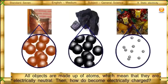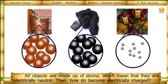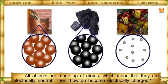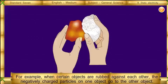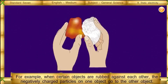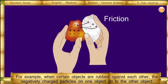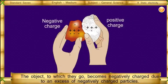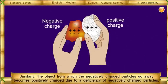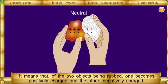All objects are made up of atoms, which means that they are electrically neutral. Then how do objects become electrically charged? For some reasons, the balance of electrically neutral atoms gets disturbed. For example, when certain objects are rubbed against each other, the negatively charged particles on one object go to the other. The object to which they go becomes negatively charged due to an excess of negatively charged particles. Similarly, the object from which the negatively charged particles go away becomes positively charged due to a deficiency of negatively charged particles. So of the two objects being rubbed, one becomes positively charged and the other negatively charged.